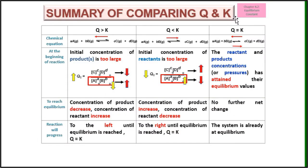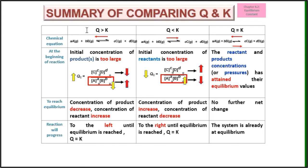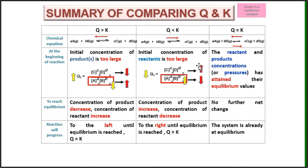Summary: Q equals K — at equilibrium, no further change, reactant and product concentrations have attained their equilibrium values. If Q is larger than K, the concentration of product is too large, so the system shifts to the left to decrease product concentration and increase reactant concentration. If Q is smaller than K, the concentration of reactant is larger, so the system shifts to the right to reduce reactant concentration and increase product concentration, until Q equals K.